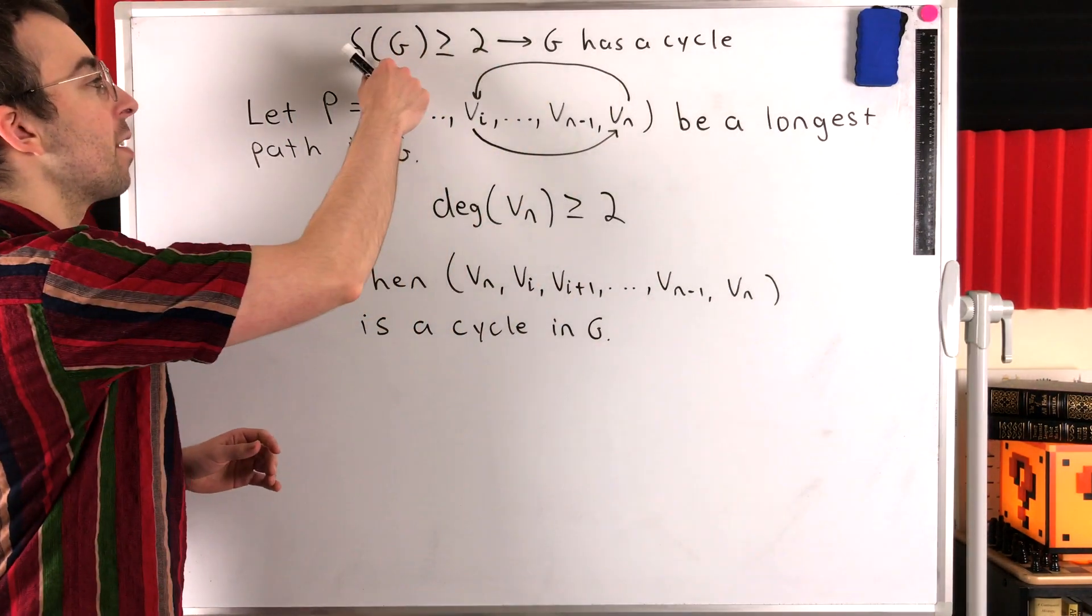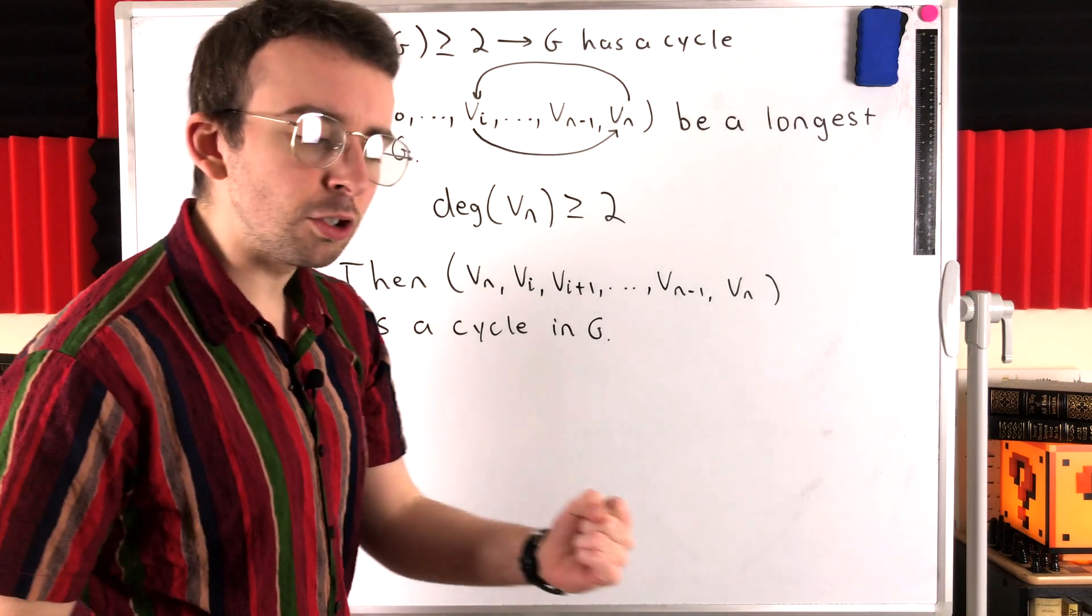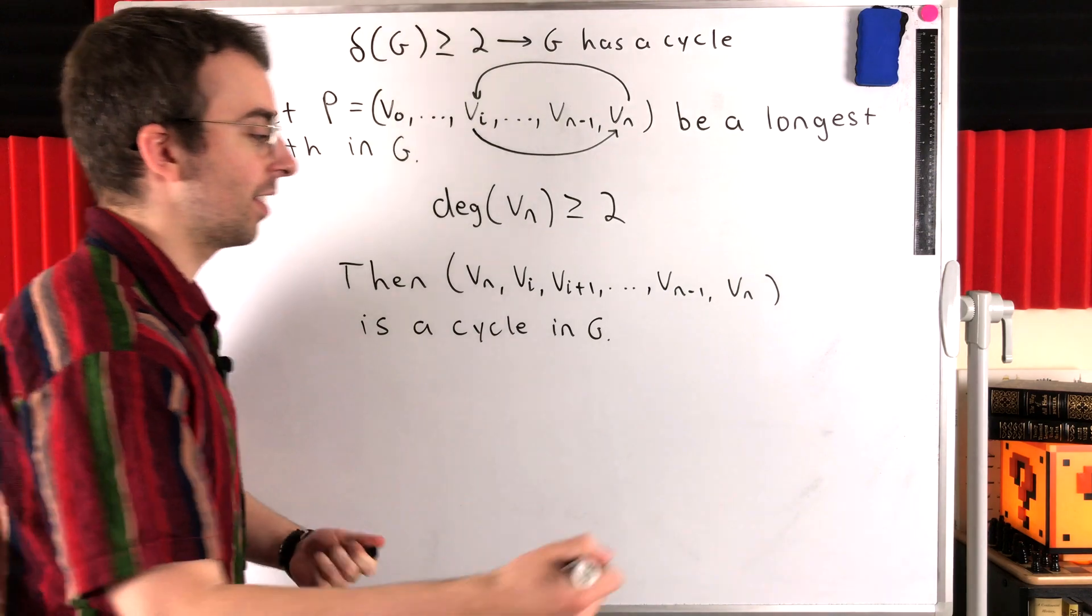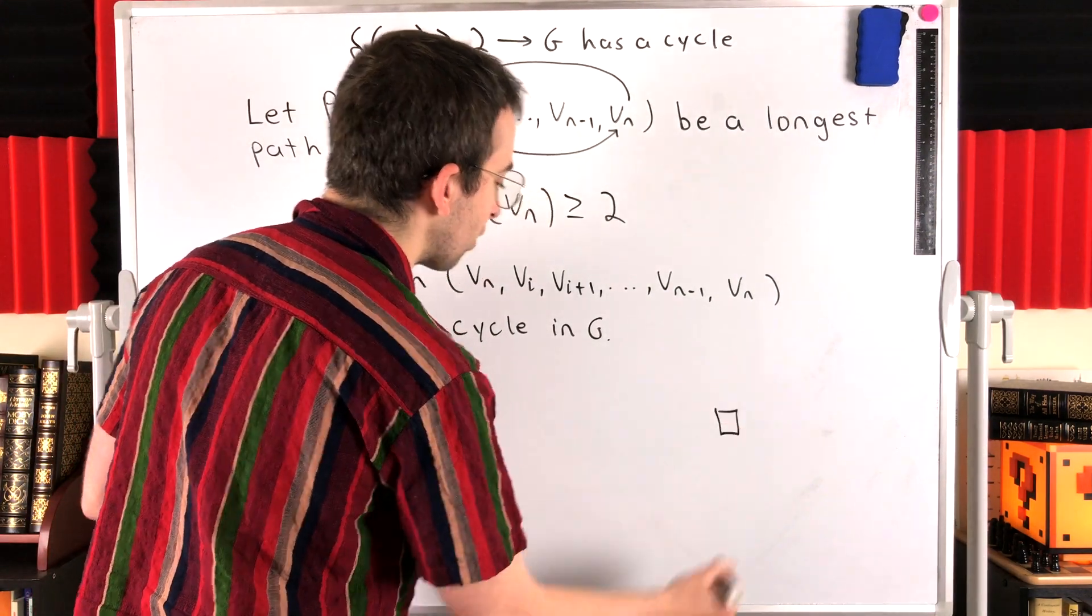So if a graph has a minimum degree of at least two, if every vertex in a graph has at least two neighbors, that graph has to have a cycle. This is why. That's the proof.